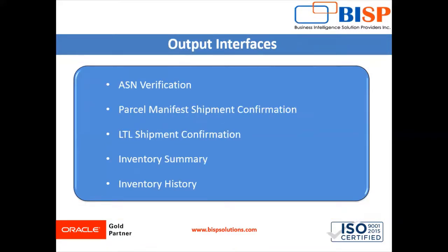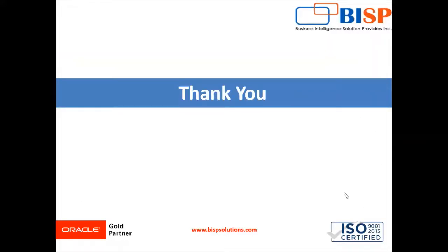We have some standard output interfaces. Oracle WMS Cloud can share information to the external system through our output interface. For example: ASN, inbound verification, shipment confirmation, parcel manifest, LTL shipment, inventory summary, and inventory history. These are the output interfaces for outbound integration. This is all about the System Integration Framework, supported formats, and input and output interface integration. Thanks for watching this video. Thank you so much.